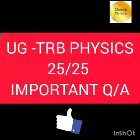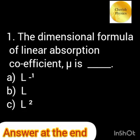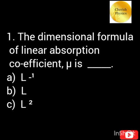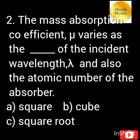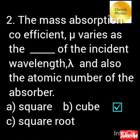Welcome to my channel Cherries Physics. The dimensional formula of linear absorption coefficient mu varies as dash of the incident wavelength and the atomic number of the absorber.